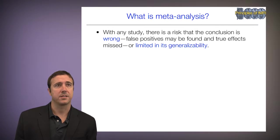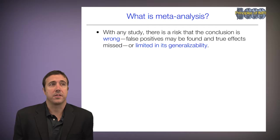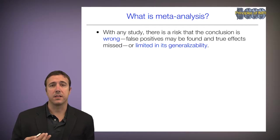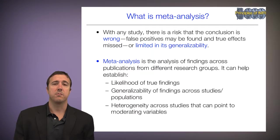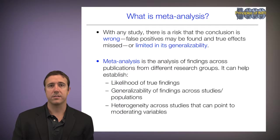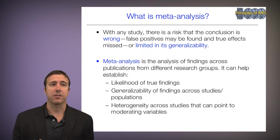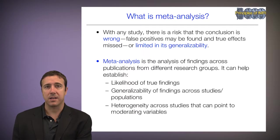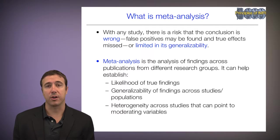So what is meta-analysis? With any study, there's a risk that the conclusion is wrong — that's a false positive — or that it's limited in its generalizability across experiments and contexts. Meta-analysis is the analysis of findings across publications from different research groups. It can help establish the likelihood of the true findings, the generalizability across studies and populations and research teams, and evaluate heterogeneity across studies that can point to moderating variables influencing the sizes or incidence of those effects.